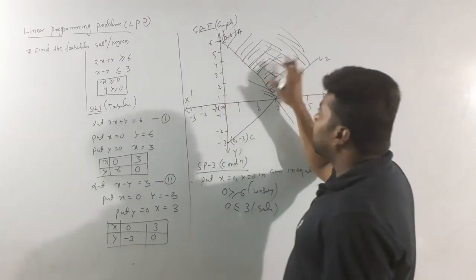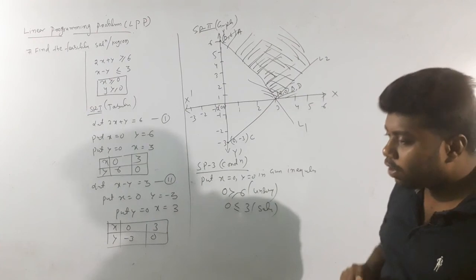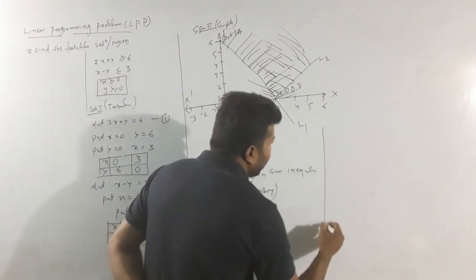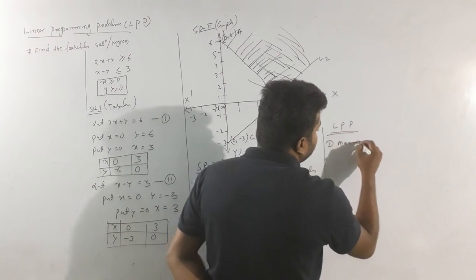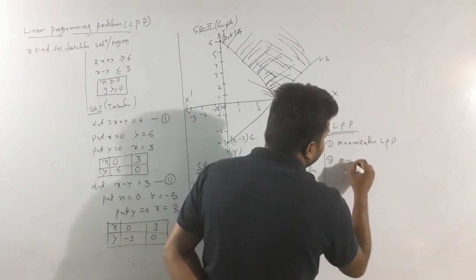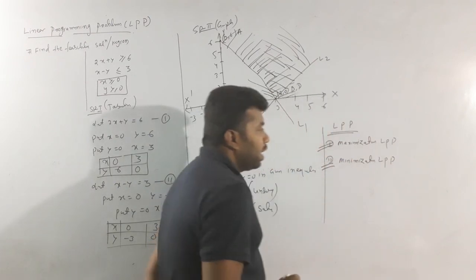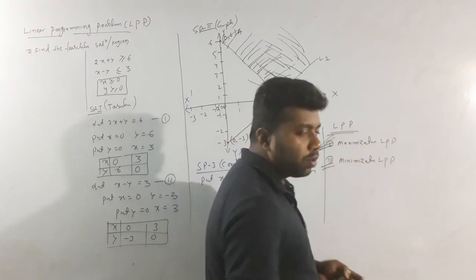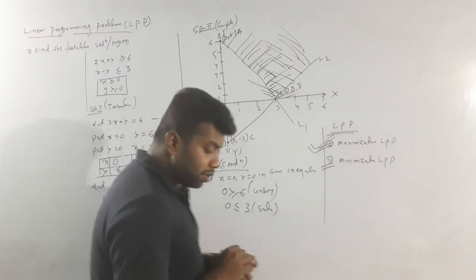Looking at the LPP data types, the first type is the maximization problem and the second is the minimization problem. From an exam point of view, maximization LPP is the most important — approximately 90% of exam questions are on maximization LPP. Thank you, students, for watching.